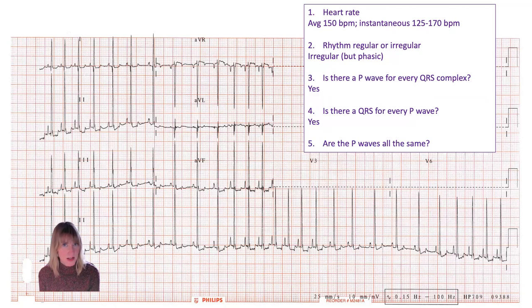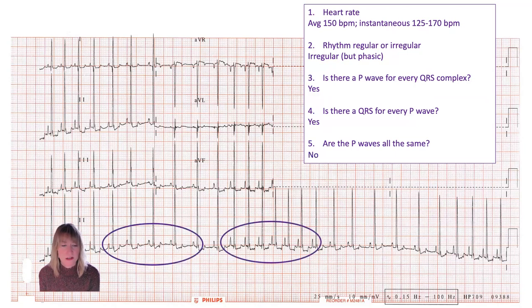As to whether all the P waves are the same, that's where things get interesting. They're not all the same, and I've identified two populations here. We have some that look smaller or shorter, and others that look taller, so there's definitely two populations here. I'm already starting to think, is that because they're arising from different locations, or are they perhaps taking a different pathway through the atria, or a bit of both?